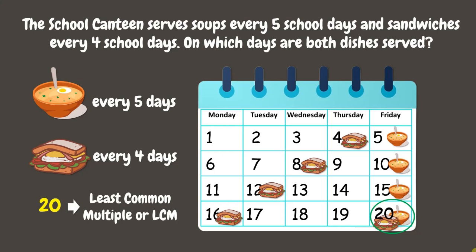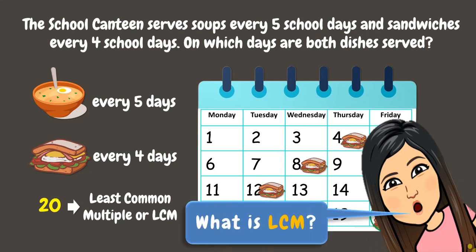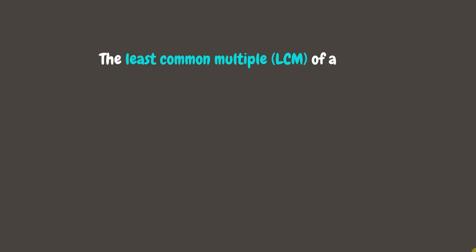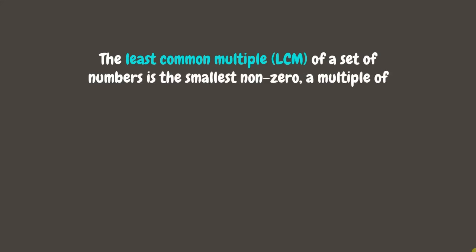But do you know what an LCM is? The Least Common Multiple of a set of numbers is the smallest non-zero number that is a multiple of all numbers in the set. We can find the LCM by listing all the multiples of the numbers in the set.